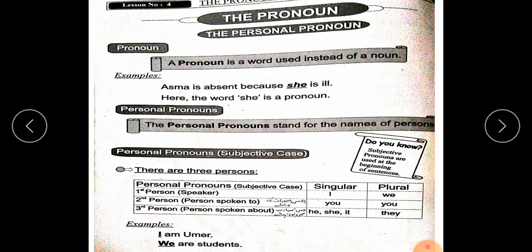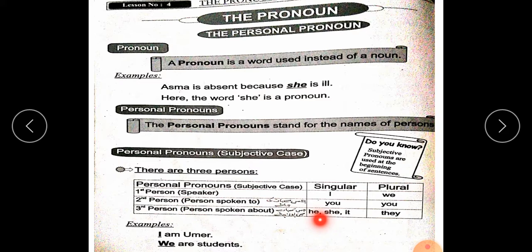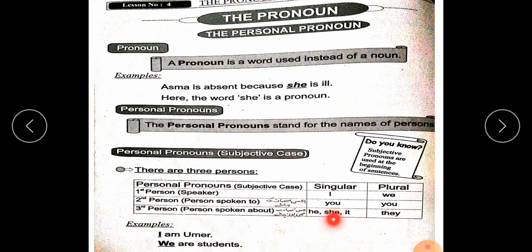There are three persons. First person is the speaker — I and we. Second person is the person spoken to — you and you. You may be singular or plural. Third person is the person spoken about — he, she, it, or they.